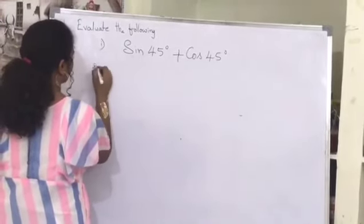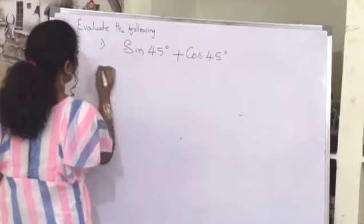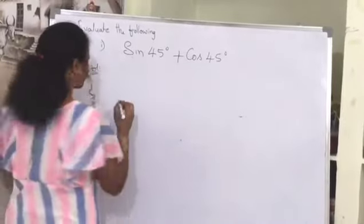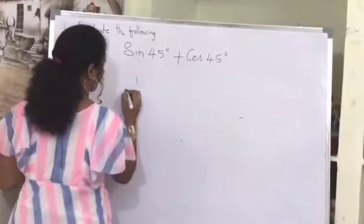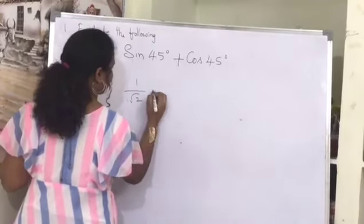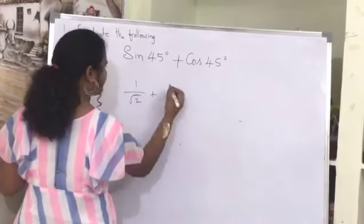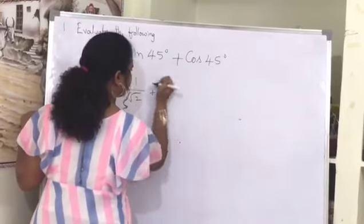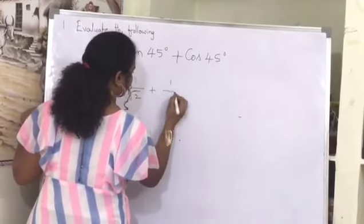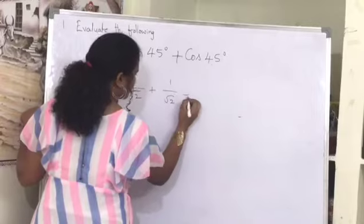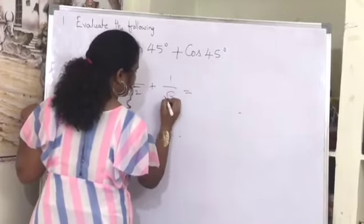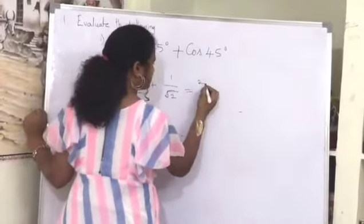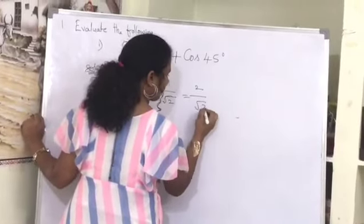As we know, sin 45 equals 1 by root 2, and cos 45 also equals 1 by root 2. Writing 1 by root 2 plus 1 by root 2 gives us 1 plus 1 equals 2, so we get 2 by root 2.